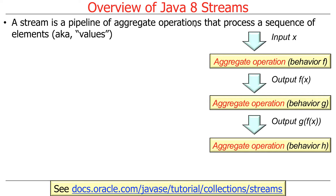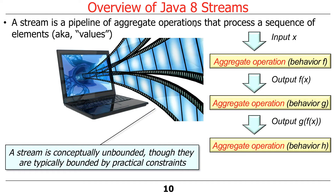So what's a stream? A stream is basically a pipeline of aggregate operations that process a sequence of elements, also known as values — they're really objects, but we call them values for various reasons. You have a pipeline of aggregate operations that map input to output in a composed way. You can think of a stream as conceptually unbounded — you could have an unbounded stream that goes on forever. But in practice, they're typically bounded because of practical constraints. You can generate an infinite stream, and that's actually ridiculously easy to do in Java, as we'll show later.